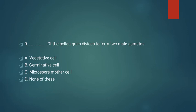Question number nine: which cell of the pollen grain divides to form two male gametes? Option A: vegetative cell. Option B: generative cell. Option C: microspore mother cell. Option D: none of these. The generative cell of the pollen grain divides to form two male gametes, so option B is the correct answer.